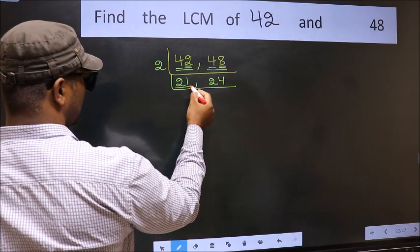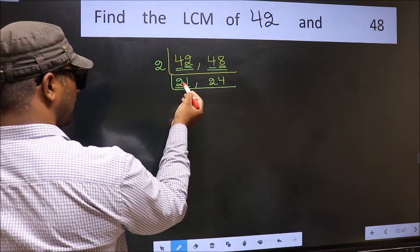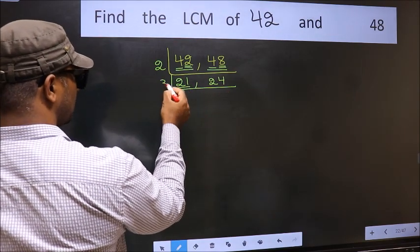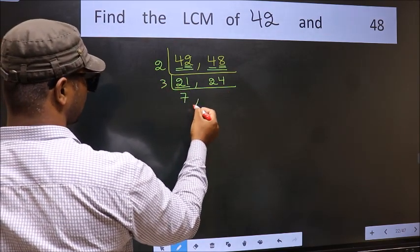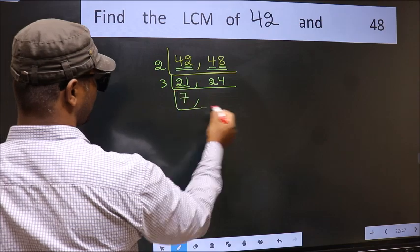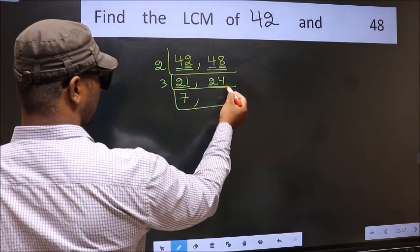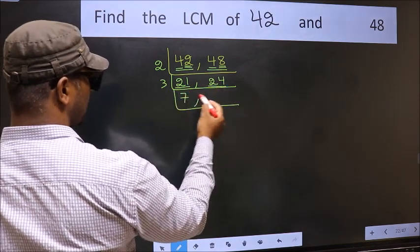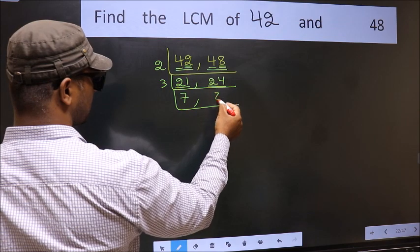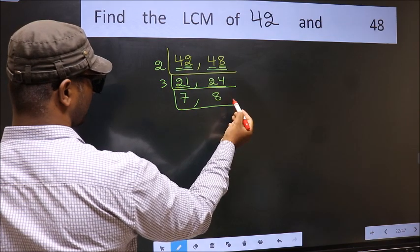Now here we have 21. 21 is 3 sevens. The other number is 24 — when do we get 24 in the 3 times table? 8 threes are 24.